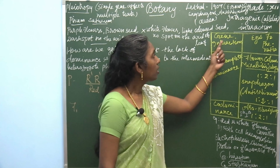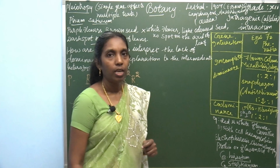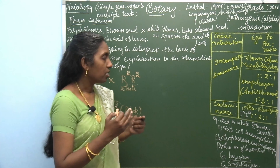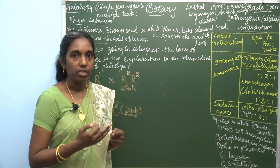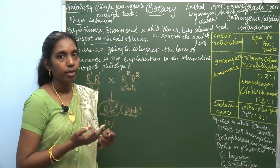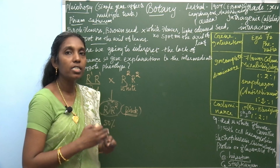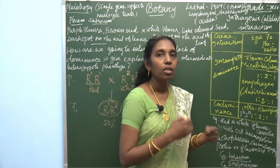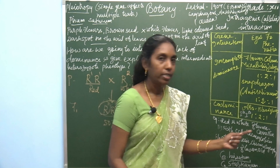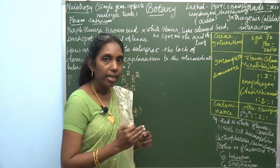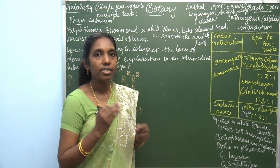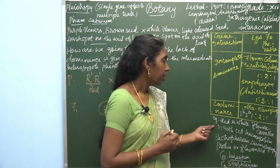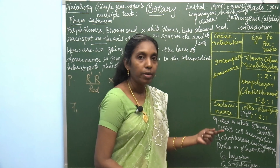Now let's see the other example of intragenic interaction — codominance. In codominance, the genotypic and phenotypic characters are simultaneously expressed. It is the character of simultaneous expression of the genes. In human beings there is the ABO blood group — here IA and IB in the I gene express together simultaneously, giving a 1:2:1 ratio. In plants there are also a few examples of codominance.